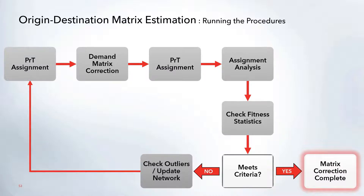For the overall workflow: first run your initial PRT assignment, then run the demand matrix correction. Once the matrix is corrected, rerun the PRT assignment so the new demand is loaded into the network, then perform the assignment analysis to check the fitness statistics. If results don't yet meet your criteria, check for outliers, make any network updates, and rerun the assignment and demand matrix correction. Once assignment results look good, the matrix correction is complete and you can turn it off and continue running just the PRT assignment.